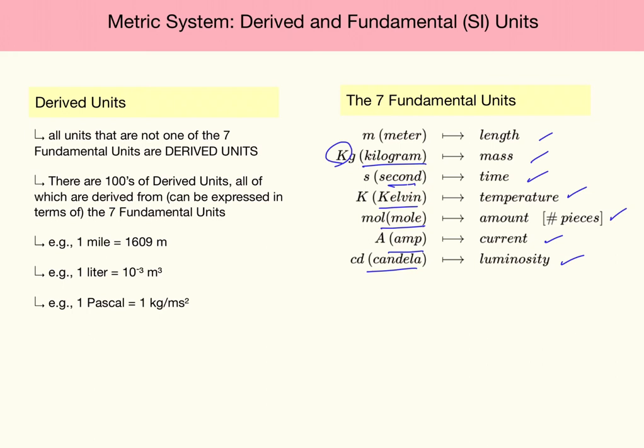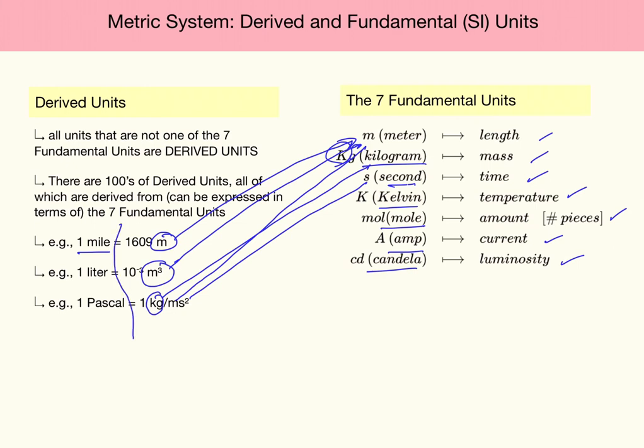Every other unit in the universe can be expressed in terms of those seven. For example, you can express one mile in terms of meters. That is one of your SI units. You can describe a liter in terms of meters squared. Again, that can be expressed in terms of a meter. A Pascal in physics can be described as a kilogram meter per second squared. And if you notice, kilogram is one of your SI units, meters is one of your SI units in seconds. So this somewhat messy diagram shows you the units that you're normally used to. But the fact that every one of these derived units can be expressed in terms of metric SI units.